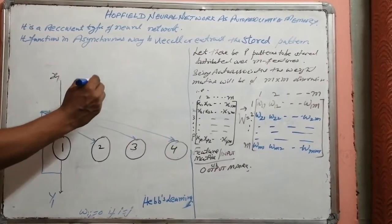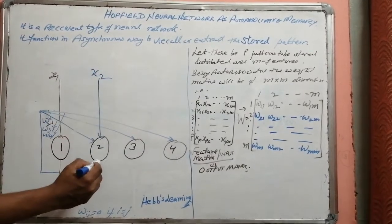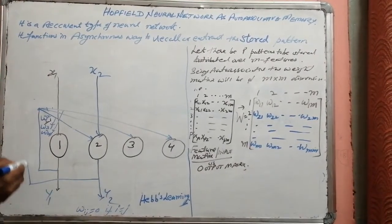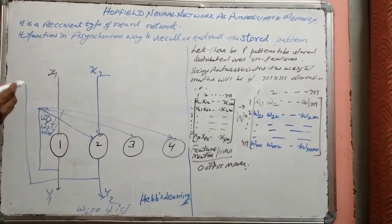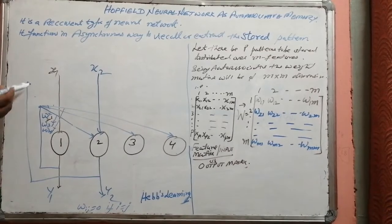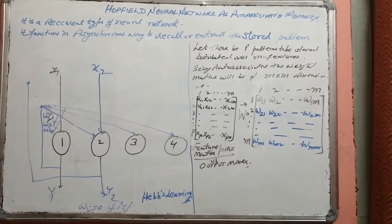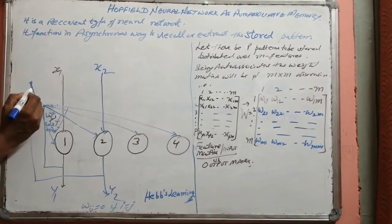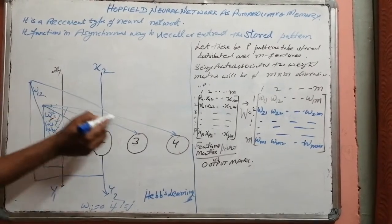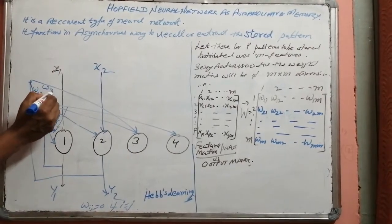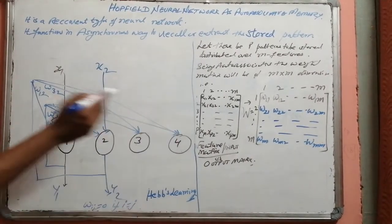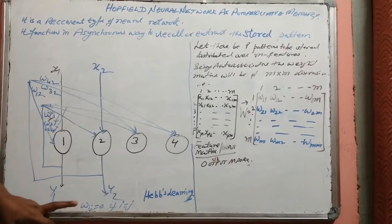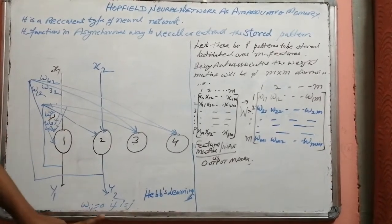In the same way, neuron number two receives input X2 and produces output Y2. This Y2 will be fed back to each other neuron except itself. So it will go to neuron number one as W12, to neuron number three as W32, and to neuron number four as W42.